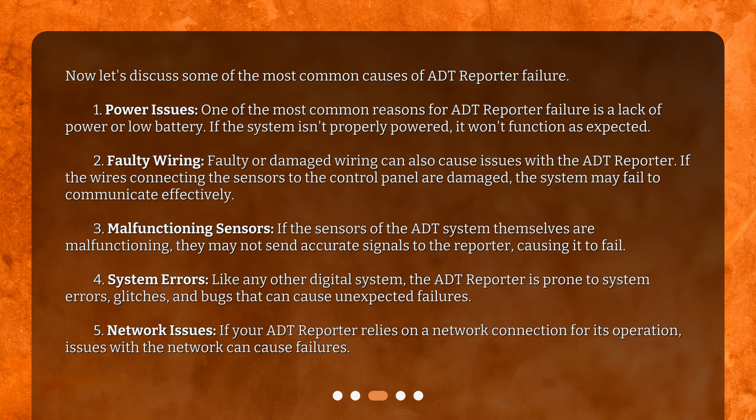Second, faulty wiring. Faulty or damaged wiring can also cause issues with the ADT reporter. If the wires connecting the sensors to the control panel are damaged, the system may fail to communicate effectively. Third, malfunctioning sensors. If the sensors of the ADT system themselves are malfunctioning, they may not send accurate signals to the reporter.